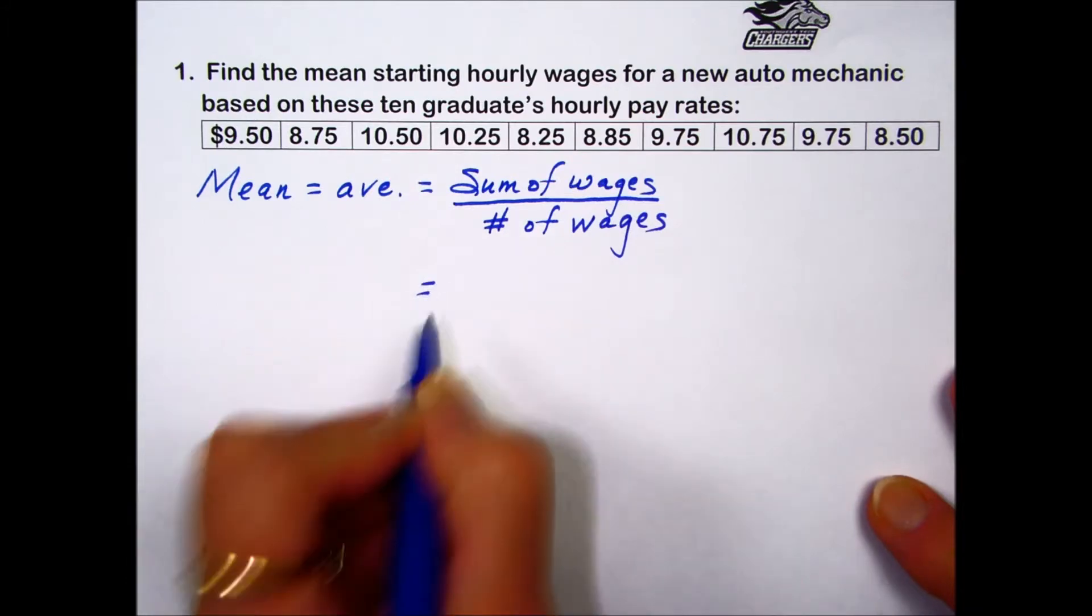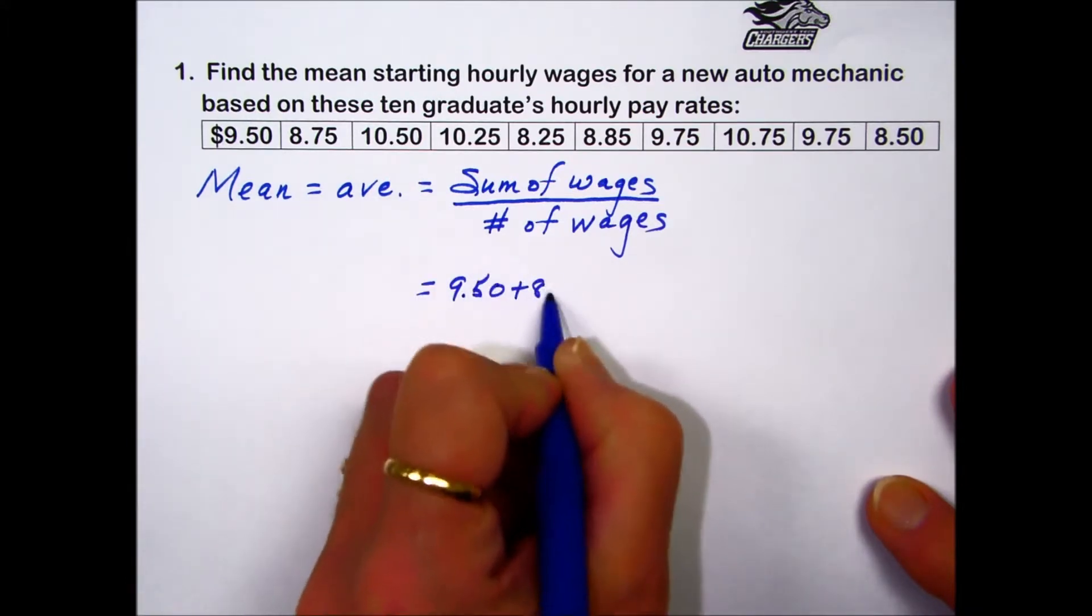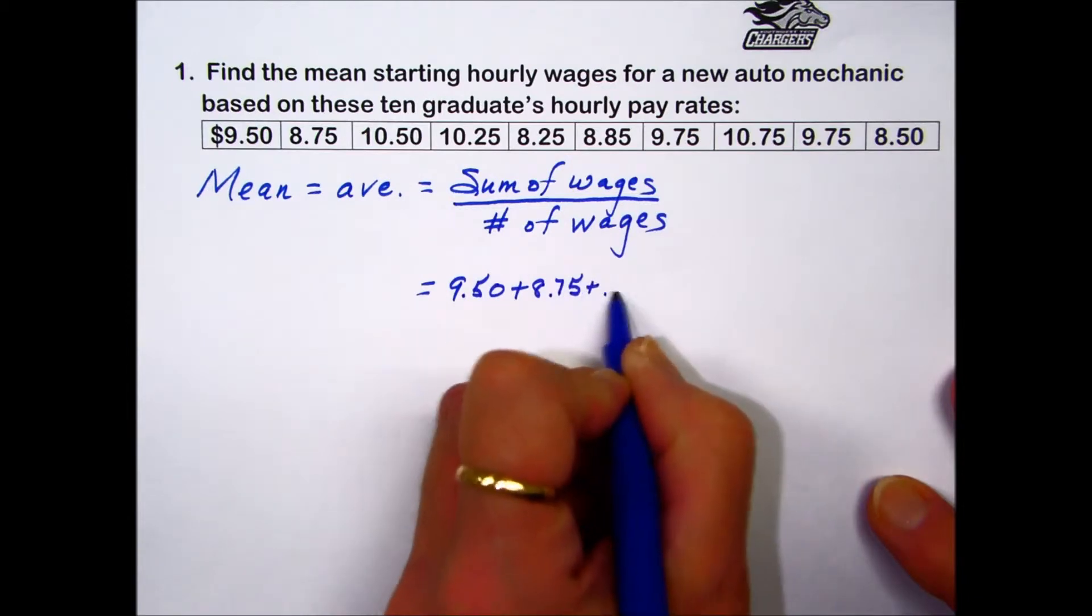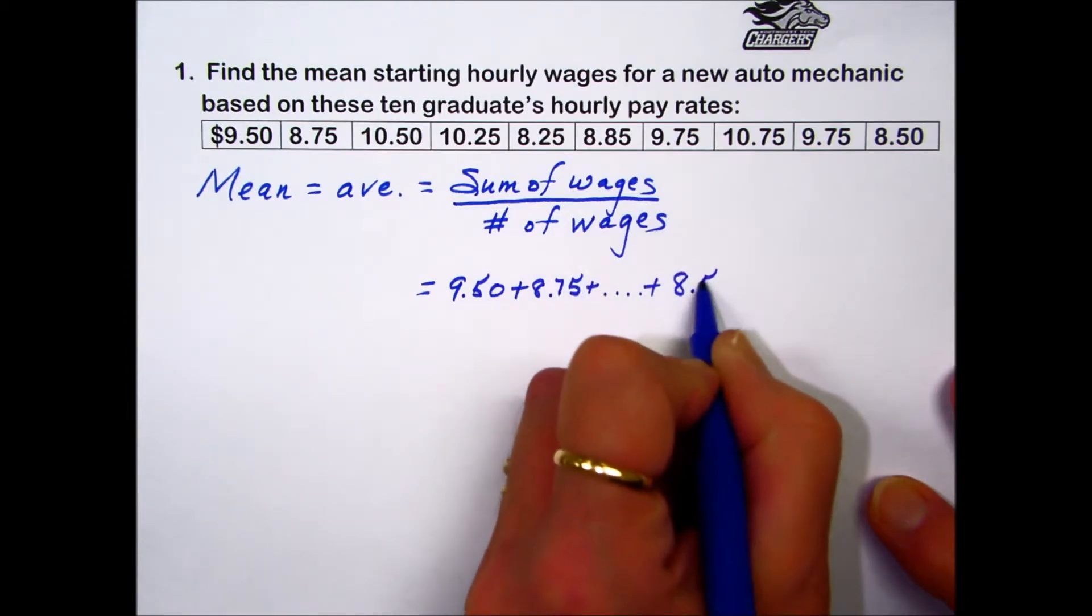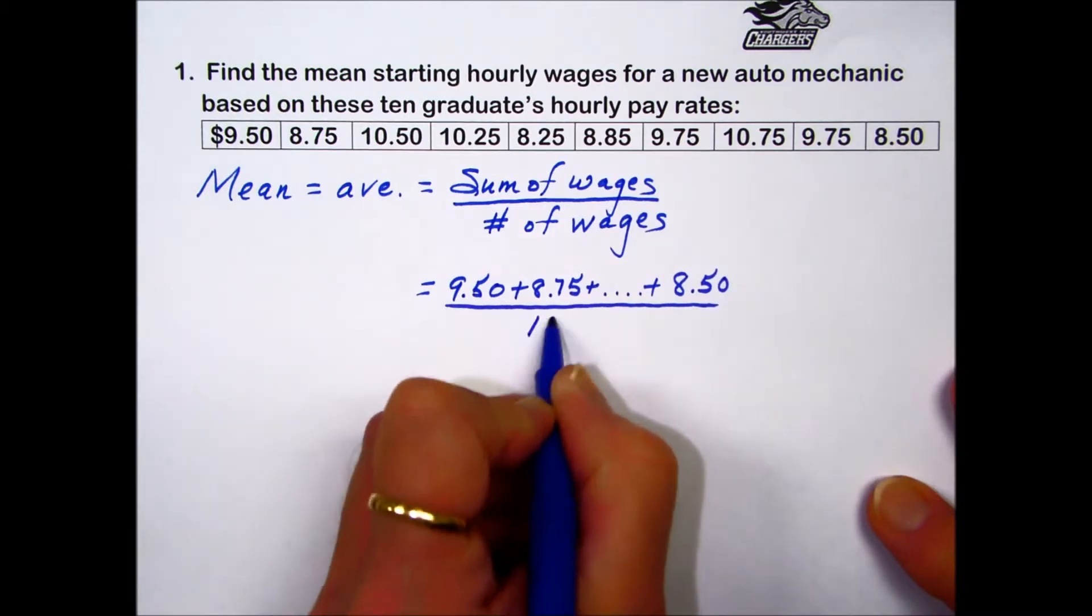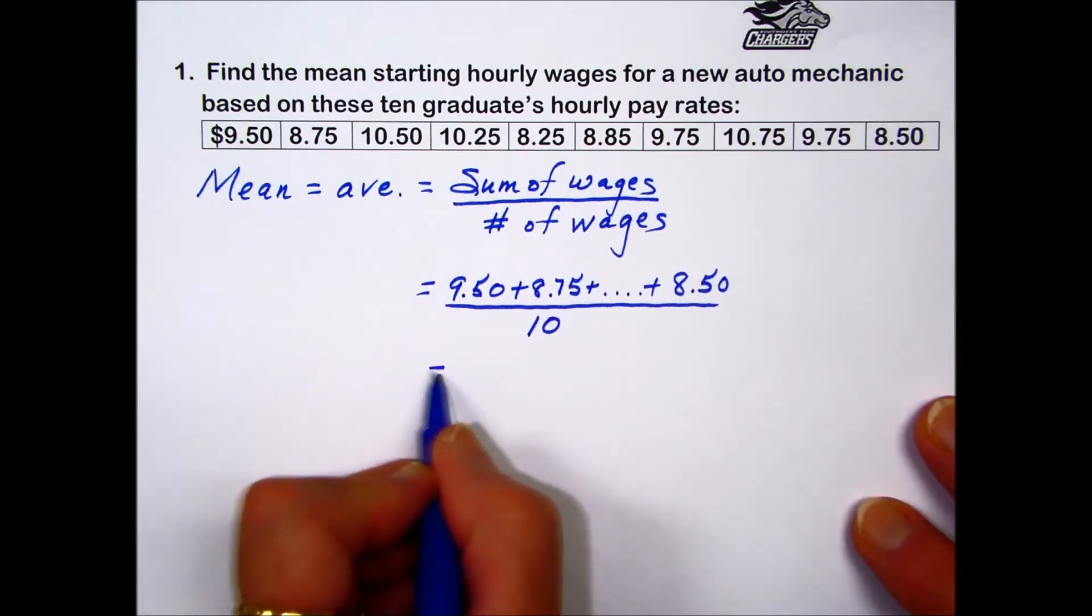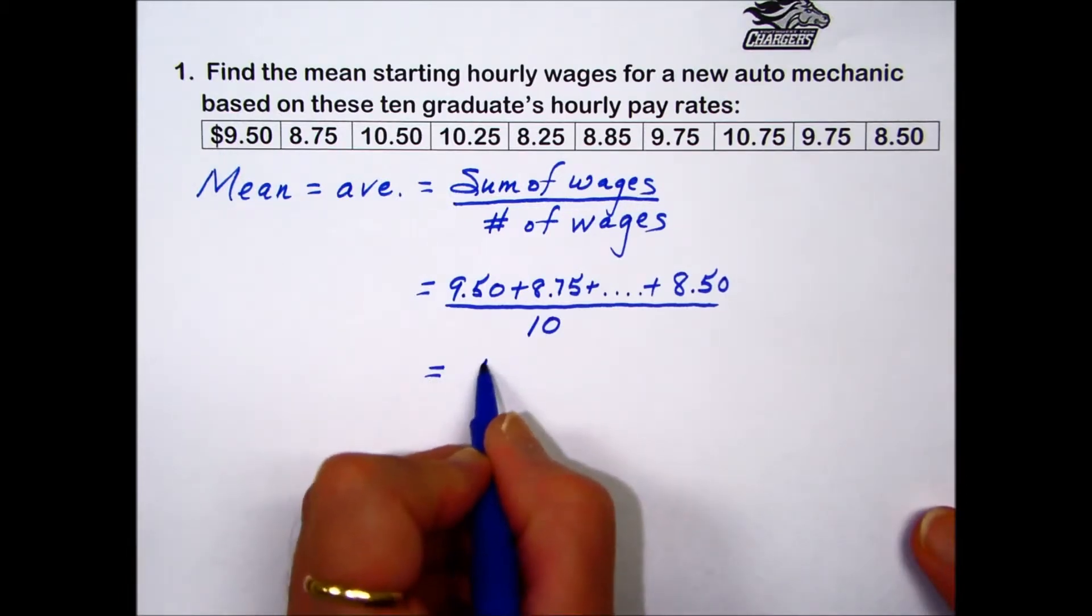So we're going to add up the $9.50, the $8.75, and all the way through to the end, the last value in that table of $8.50, divided by the 10 graduate students indicated there.